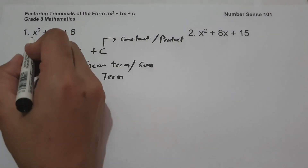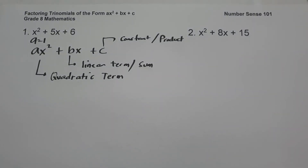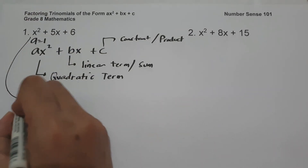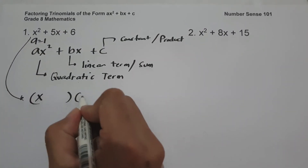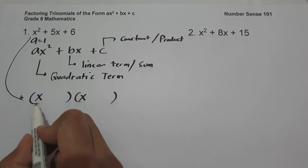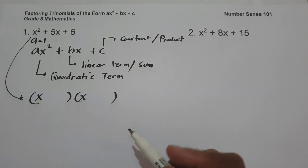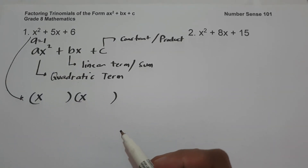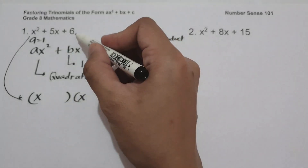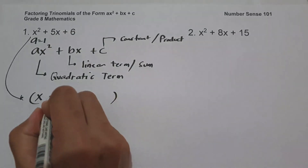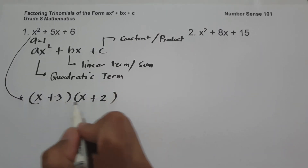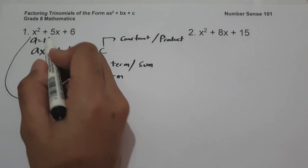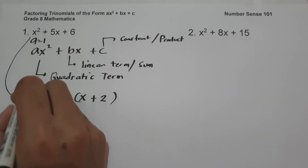Since the value of a is equal to 1, we need to find the factors. The factors of x squared are x and x. What are the two numbers that if we multiply we get 6, and if we add we get 5? That is positive 3 and positive 2. Three times 2 is 6, and 3 plus 2 is 5. So this will be our answer.